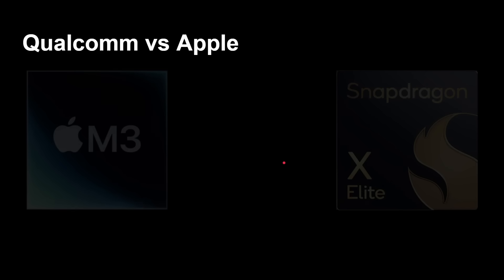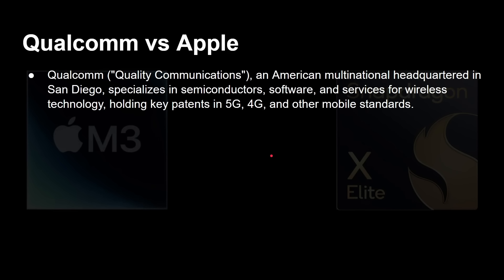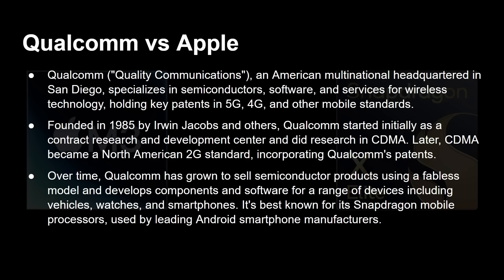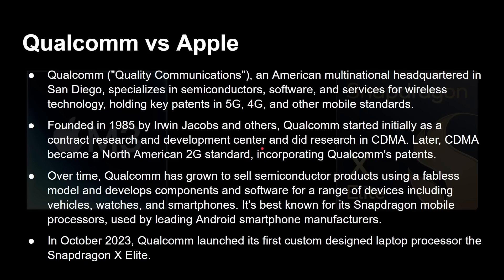So Qualcomm versus Apple — these are the two companies making these chips. Qualcomm, Quality Communications, is an American multinational headquartered in San Diego specializing in semiconductors, software and services for wireless technology, holding key patents for 5G, 4G and other mobile standards. It was founded in 1985 by Erwin Jacobs and others, initially as a contract and research center focused on CDMA, which later became the North American 2G standard. Over time Qualcomm has grown using a fabless model, working with TSMC or Samsung to make its chips, and it's best known for its Snapdragon mobile processors. In October 2023, Qualcomm launched its first custom-designed laptop processor, the Snapdragon X Elite.